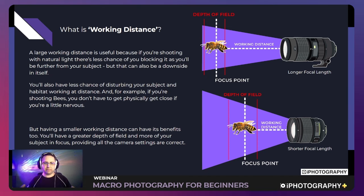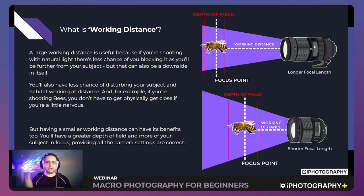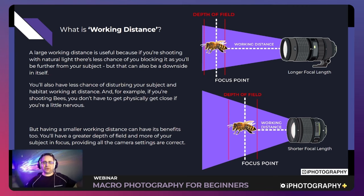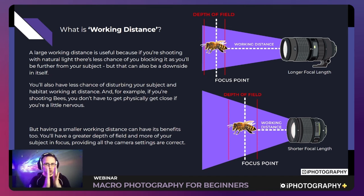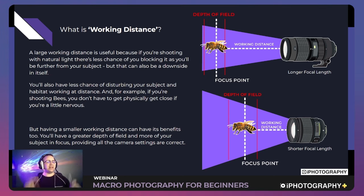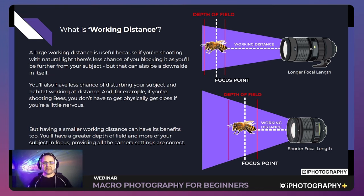A shorter working distance does have its benefits — lenses that require you to get closer tend to give a greater depth of field, so more of your subject can be in focus. It's a catch-22: you might want more depth of field but that forces you closer, whereas a larger working distance gives you shallower depth of field with only a small portion of your image sharp. Understanding the mechanics helps you make the right decision for your situation.